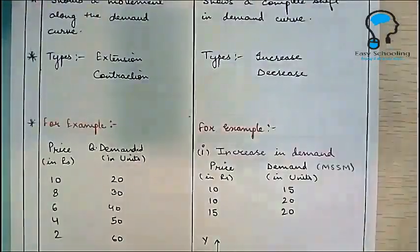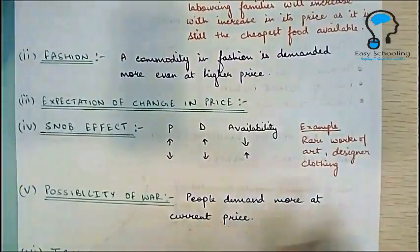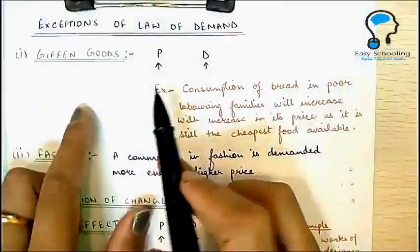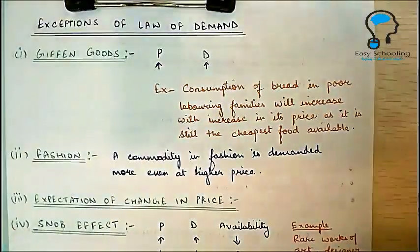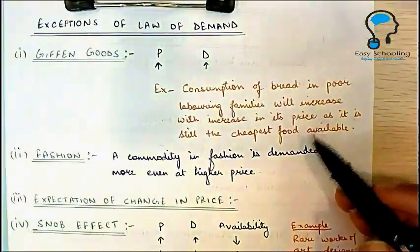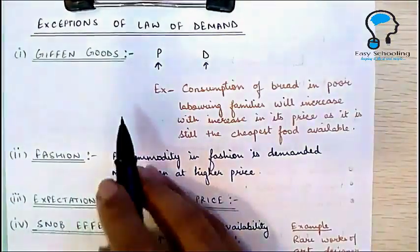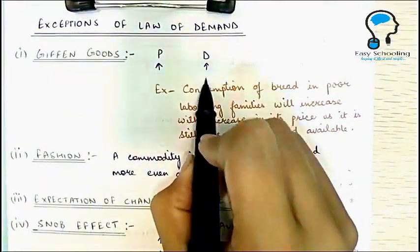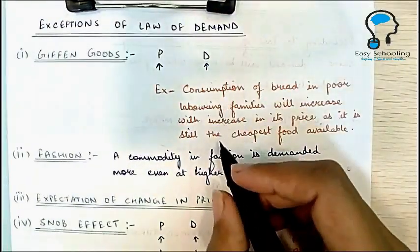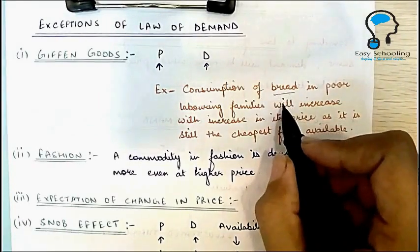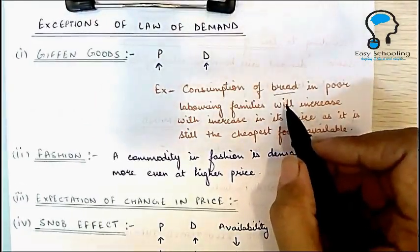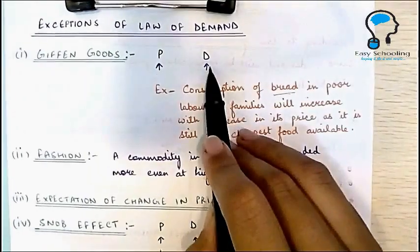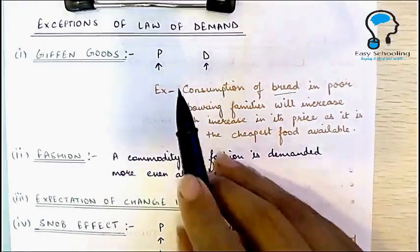In case this question is of six marks, you also need to explain the exceptions to the Law of Demand. Giffen goods are goods where an increase in price causes an increase in demand, reversing the usual Law of Demand. This concept is limited to very poor communities with a very limited choice. For example, if you are very poor and the price of bread increases, you cannot afford a more expensive alternative, so you end up buying more bread — hence demand increases with price.